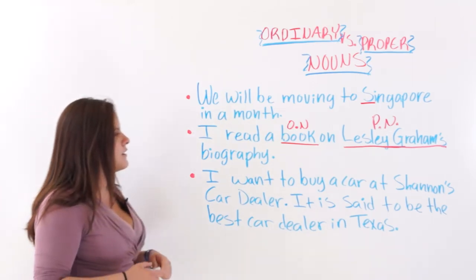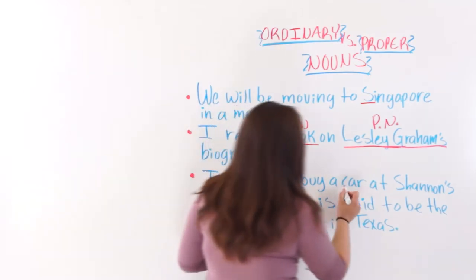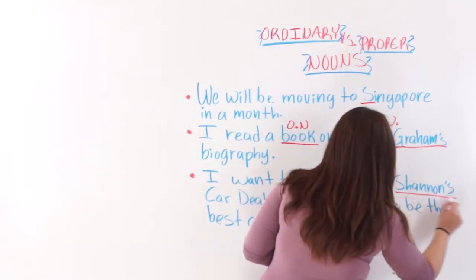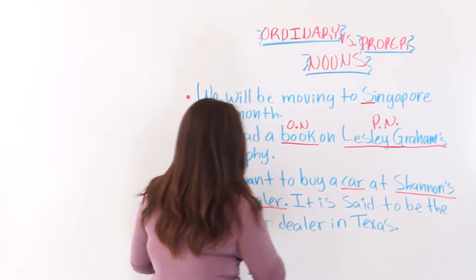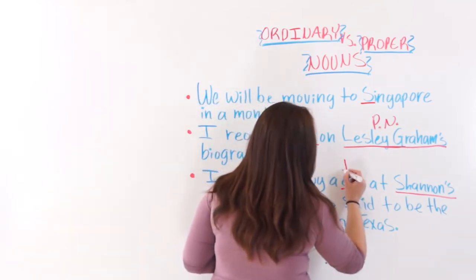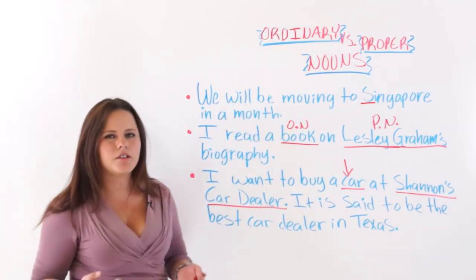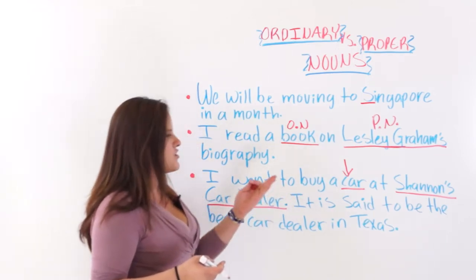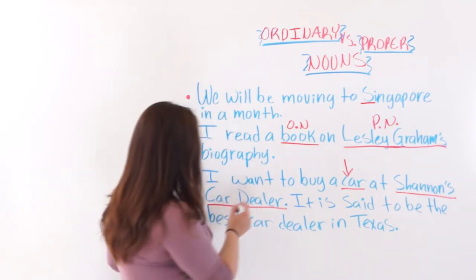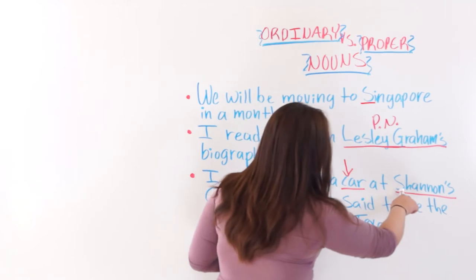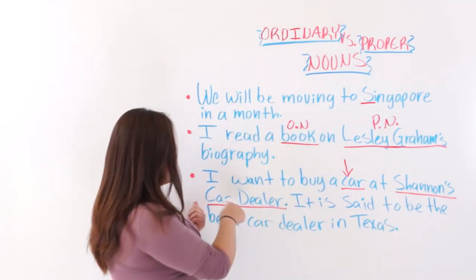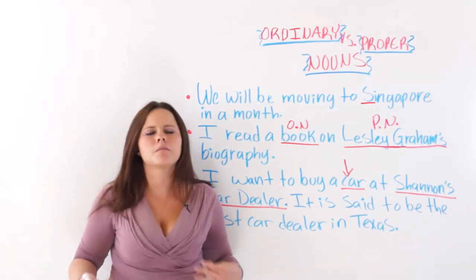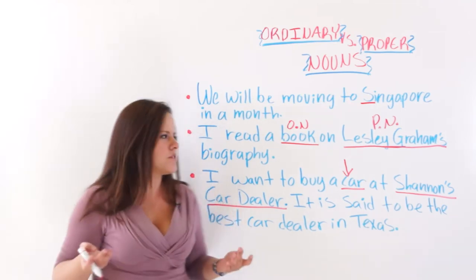Next: 'I want to buy a car at Shannon's Car Dealer.' We have two nouns here. 'Car' is a general thing, so it is an ordinary or common noun — that is why it is not capitalized. 'Shannon's Car Dealer' has all three words capitalized because it is the name of the car dealer. It is a proper noun because it is a specific place.